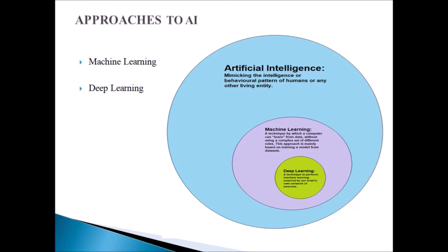Deep learning is a technique to perform machine learning inspired by our brain's network of neurons. Whenever you talk about deep learning, you are teaching machines but this time you are modeling the algorithm based on the human brain. Both machine learning and deep learning are approaches to solving AI problems — making machines intelligent. You can use machine learning with explicit algorithms that enable machines to learn from data, or deep learning where you model your algorithm according to the neurons of the human brain.